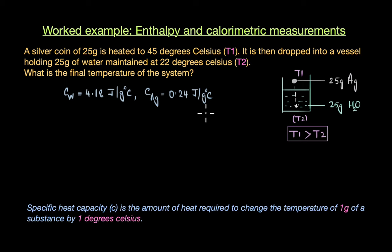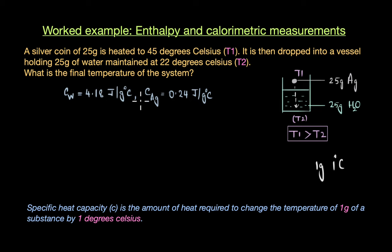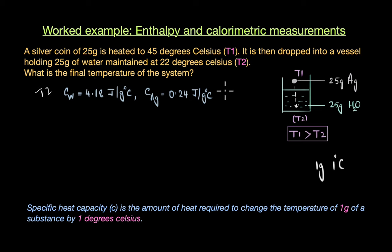Specific heat capacity is the amount of heat required to change the temperature of 1 gram of a substance by 1°C. Since water has a much greater specific heat capacity, the temperature change in water will be much smaller compared to the temperature change in silver. Water can hold a lot more heat than silver, so it will not show as dramatic a temperature change. As a result, when thermal equilibrium is attained, the final temperature will be closer to the initial temperature of water, T2, than to the initial temperature of silver, T1.